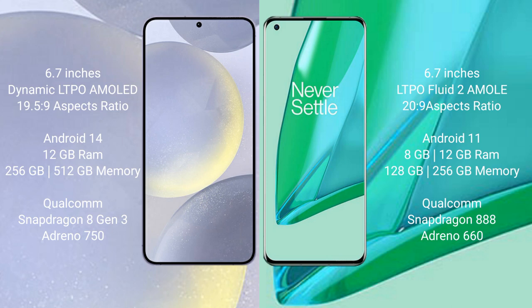Samsung Galaxy S24 Plus runs on the Android 14 operating system. OnePlus 9 Pro runs on the Android 11 operating system. Samsung Galaxy S24 Plus comes with 12GB RAM and 256GB or 512GB internal storage.